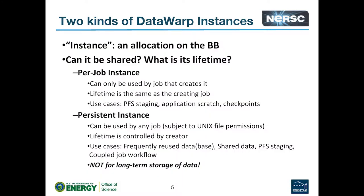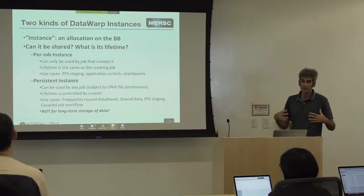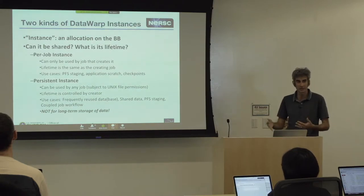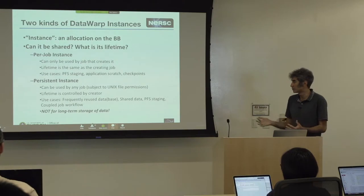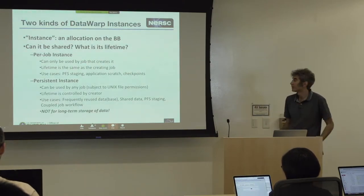When you want to use DataWarp, you create an instance. This can be per job — created by the job that uses it, and when the job ends it's automatically destroyed, including all data on it. This is still useful: you can stage in data from the file system, run on it, then stage out everything you want to save. You don't have to stage out things like checkpoints that are only needed while your application is running.